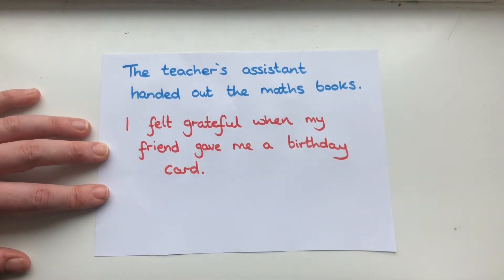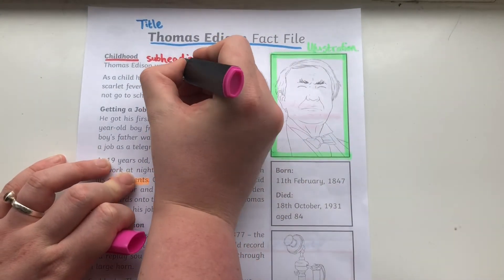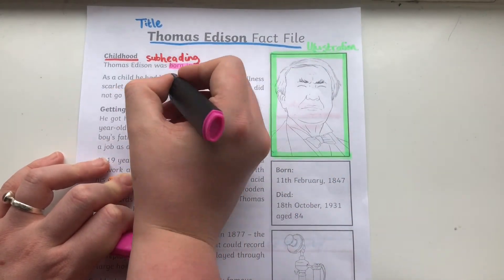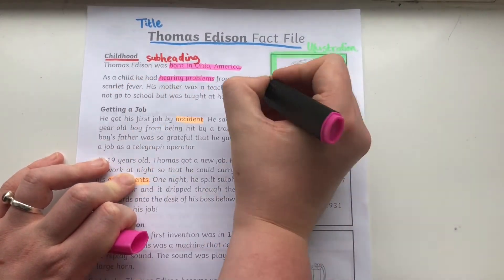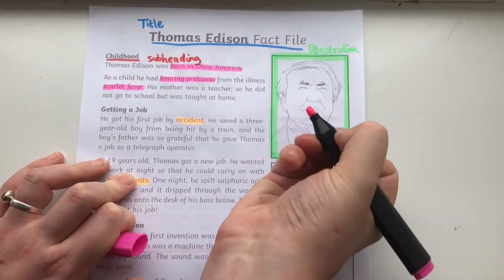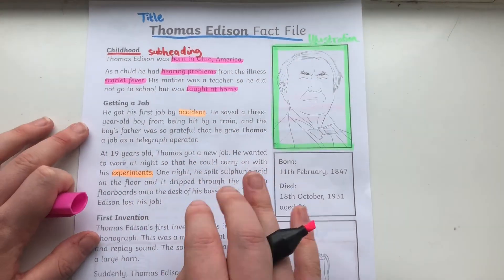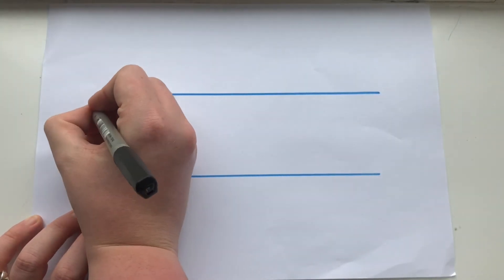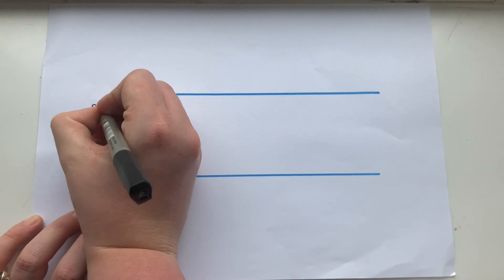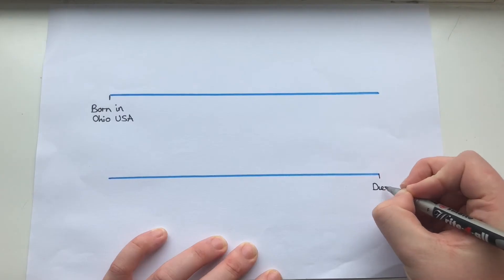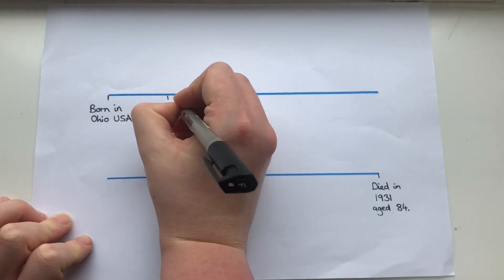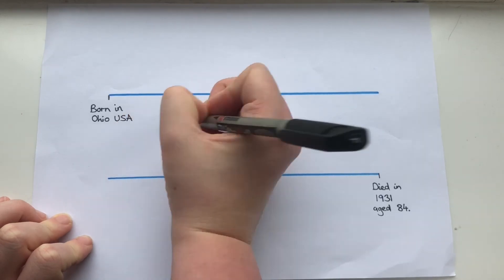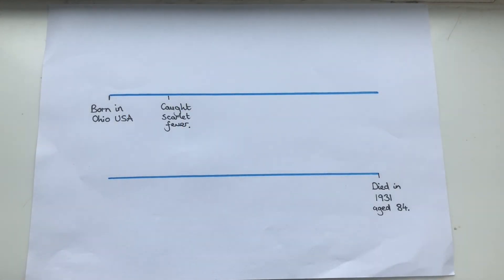Finally, Fact Files are a brilliant source for loads of fantastic information that you could use to create your own Fact File or non-chronological report. Here I'm doing something slightly different — I've highlighted all my favourite facts about the life of Thomas Edison and now I'm creating my own timeline so that other people can learn all about the life of Thomas Edison.